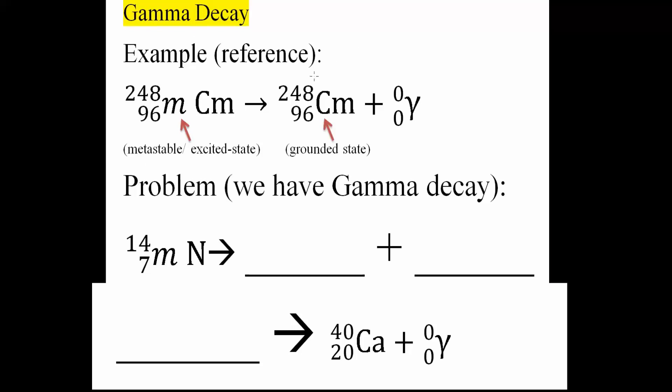From there, with gamma decay, it's always this gamma symbol here. And with gamma, it has an atomic mass of zero, atomic number of also zero. So this piece isn't going to change, except now it's going to be in ground state. So you can remove the M.